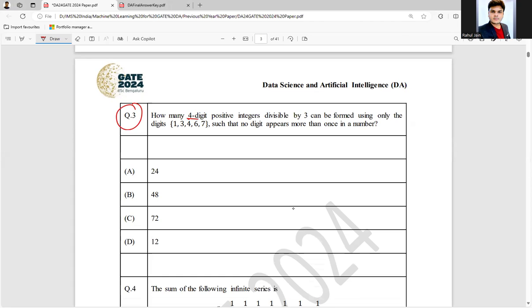How many 4 digit positive integers divisible by 3 can be formed using only the digits 1, 3, 4, 6, 7 such that no digit appears more than once in a number.